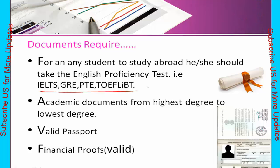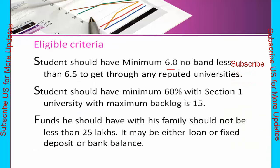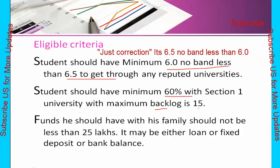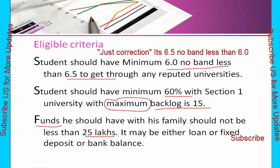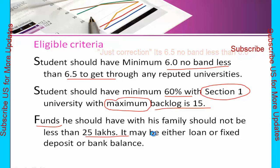Now let us see the list of documents required to study abroad. First is an English proficiency test — you need IELTS, PTE, or TOEFL. You also need academic documents, a valid passport, and a valid financial proof. The eligibility criteria is an overall IELTS band of 6.5 with no band less than 6. You need a minimum of 60% marks with up to 15% backlogs for section one universities. And funds should be a minimum of 25 lakhs — 25 lakhs is enough to go abroad and study. I will be talking about university sections in my upcoming videos.